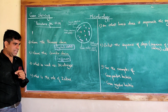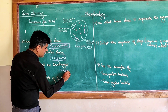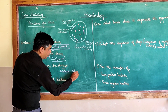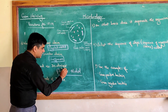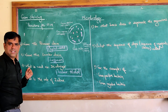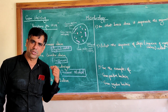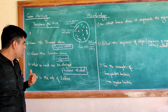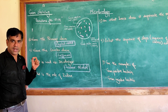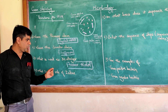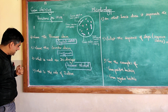The third question: what is used as a decolorizer? We use a mixture of acetone and alcohol in a 1:1 ratio as the decolorizer. Depending on the situation, some people use only alcohol or only acetone, but the most commonly used decolorizer is the 1:1 mixture of acetone and alcohol.